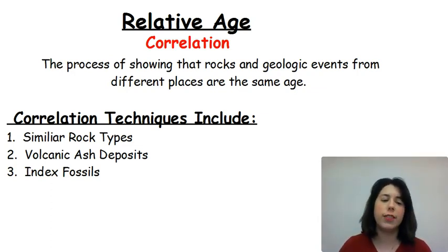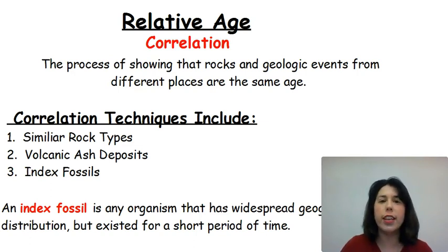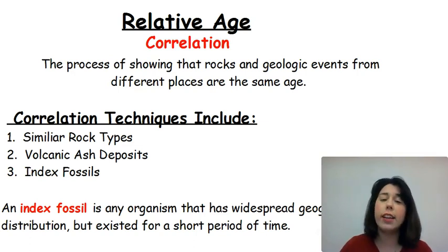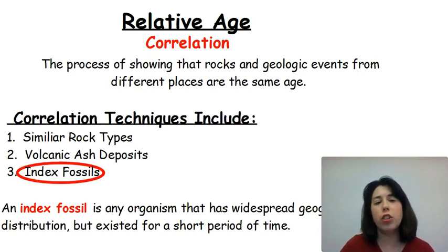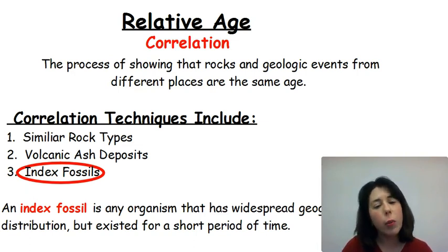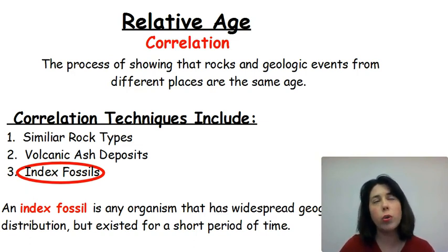Our last item we can look at are index fossils — an organism that has a widespread geographic distribution but existed for a short period of time. We're going to discuss index fossils at length in upcoming videos, where we'll talk about Earth's history and New York State index fossils. This is probably the best item we can use to help us figure out correlation. Make sure you know it has widespread geographic distribution and can be found everywhere on Earth, but it only existed for a short period of time as a species — not just an individual, but that organism's entire existence as a whole.